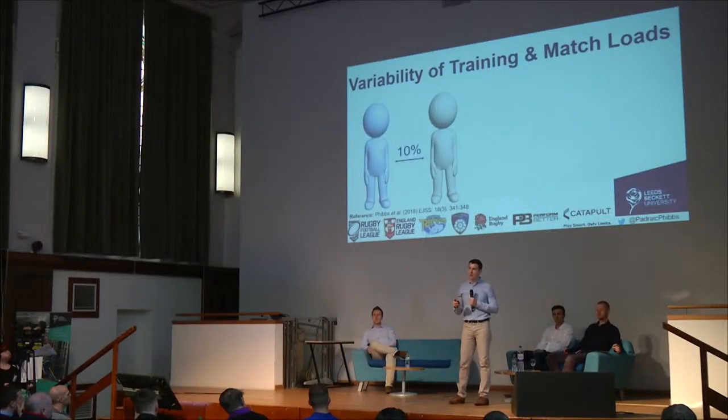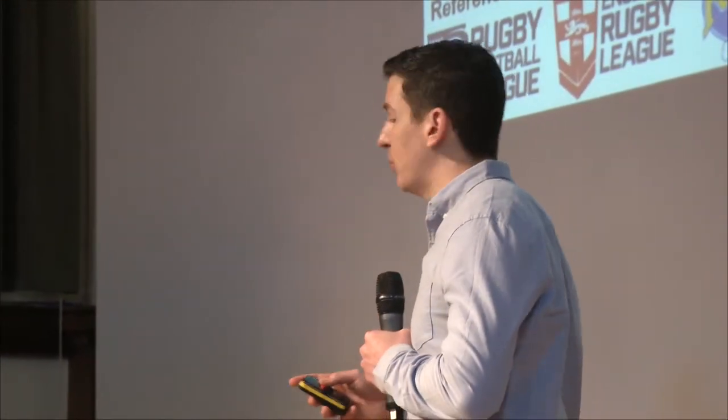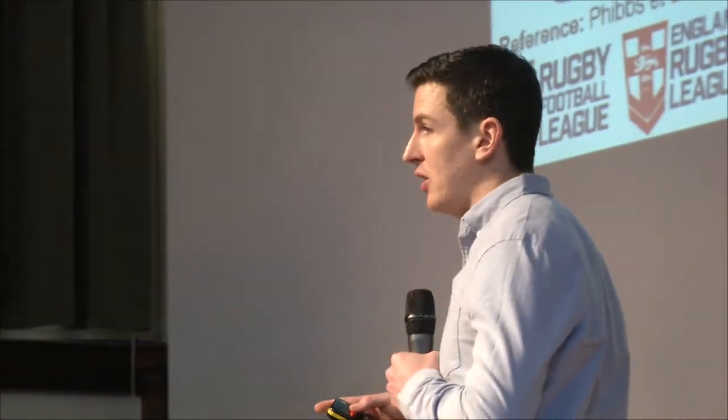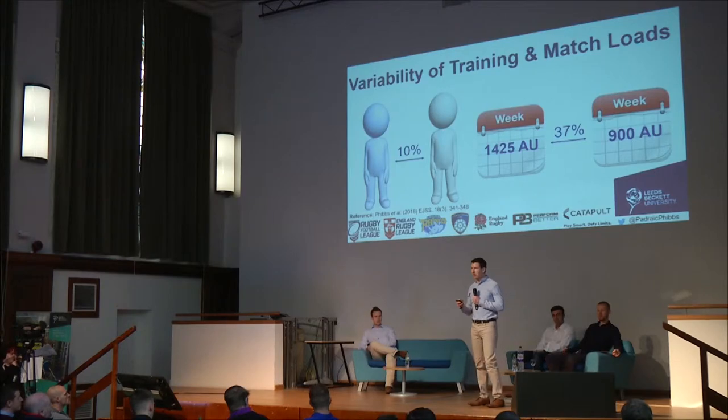One study we did here at Leeds Beckett looked at under-18 adolescent rugby union players during the school rugby season, between September and December. We tracked the variability of their training and match loads over that time. We found a typical between-individual variability of 10%. But more interestingly, we saw a greater within-participant variability — what one person does this week compared to next week — with a variability of typically 37%. So although their average session RPE loads were just over 1,400 units, the following week they could do as high as 1,900 units or as little as 900. So it's highly variable.